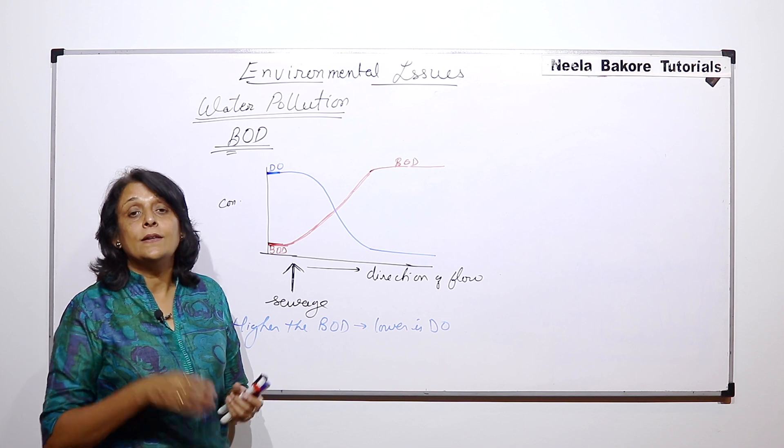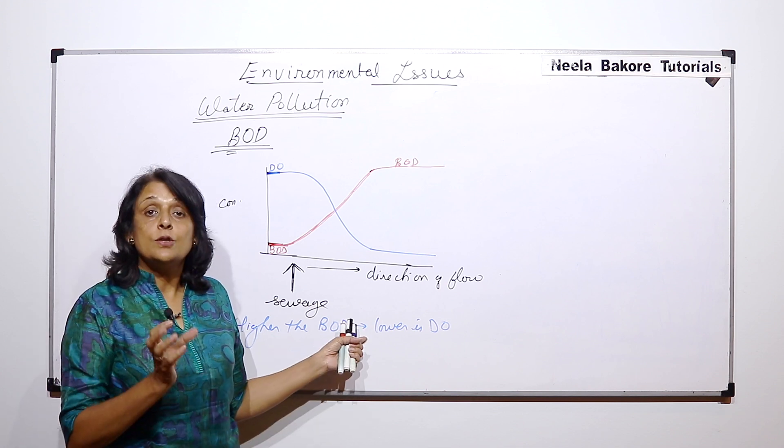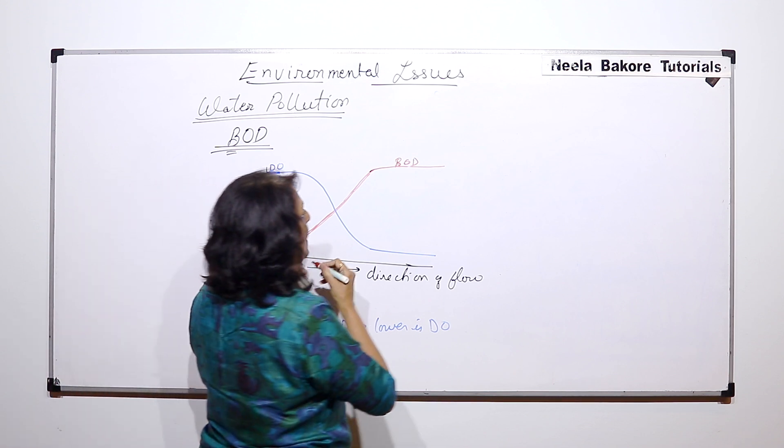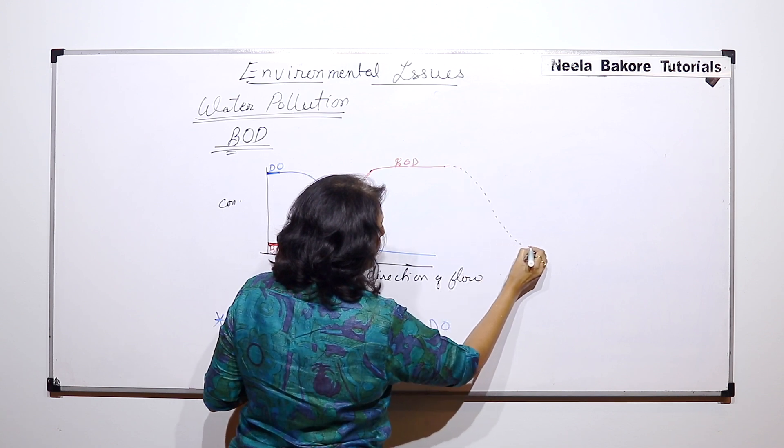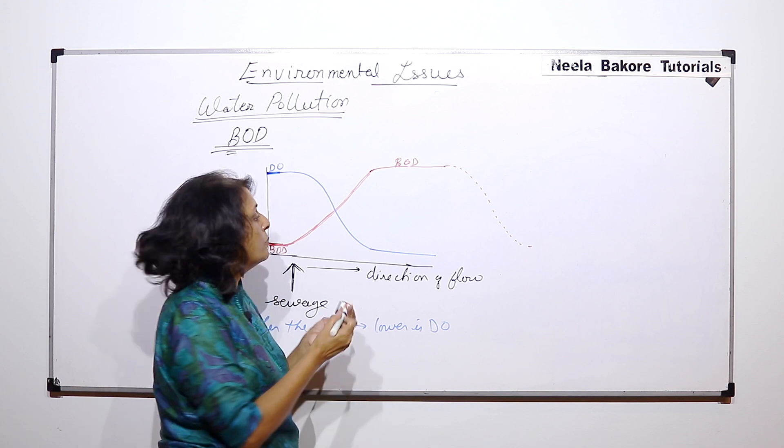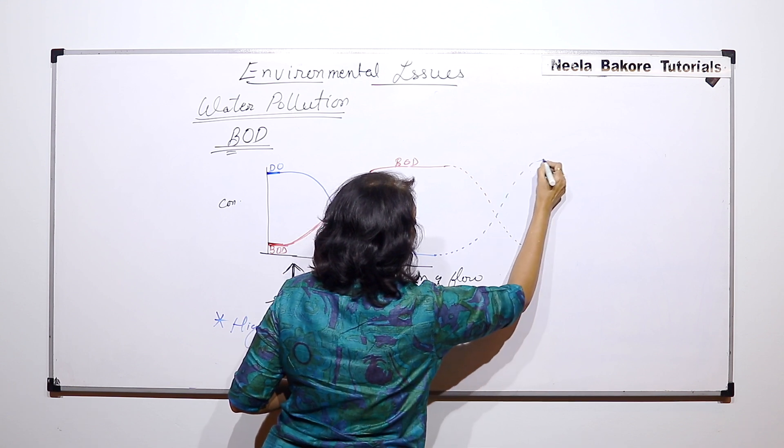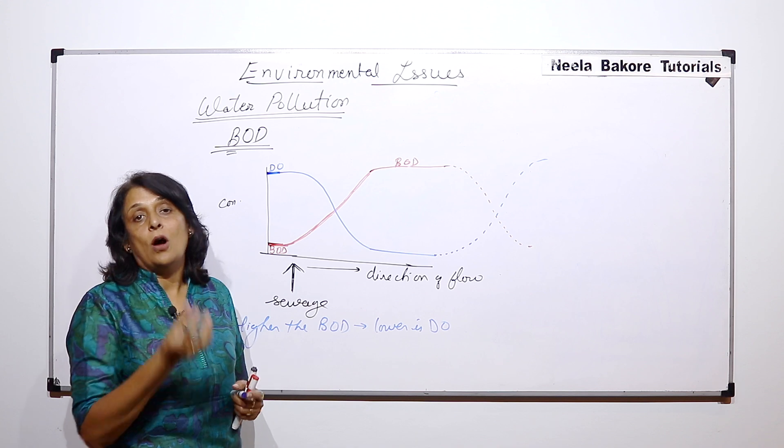As organic matter becomes less and less in the water body because most of it got decomposed, biological oxygen demand will start coming down. The oxygen which is present in the water body will stay in the water body as dissolved oxygen, so it will come back to its original concentration.